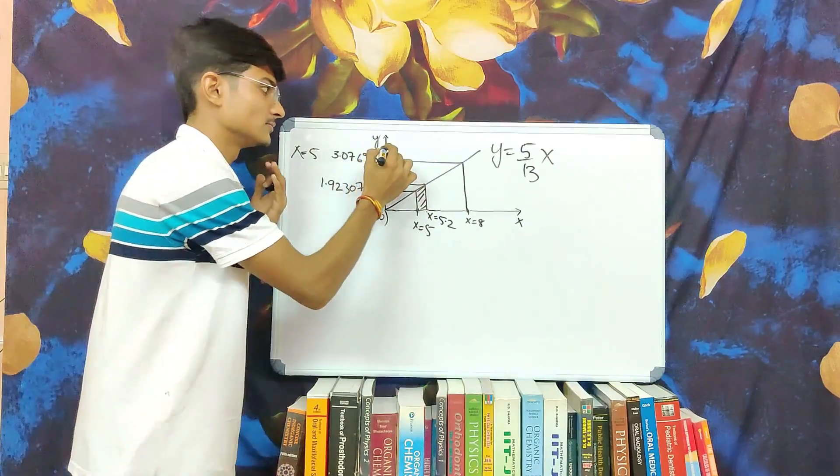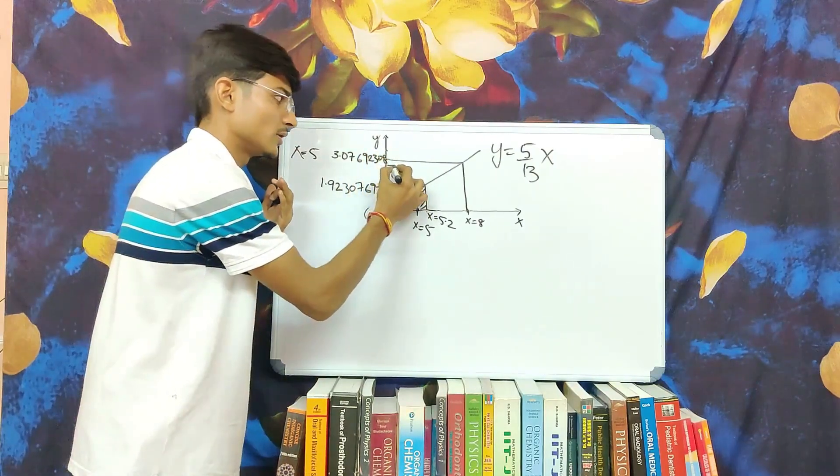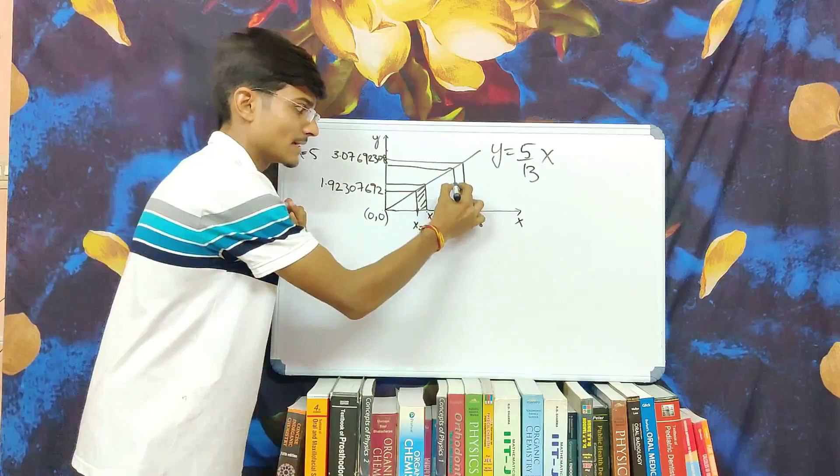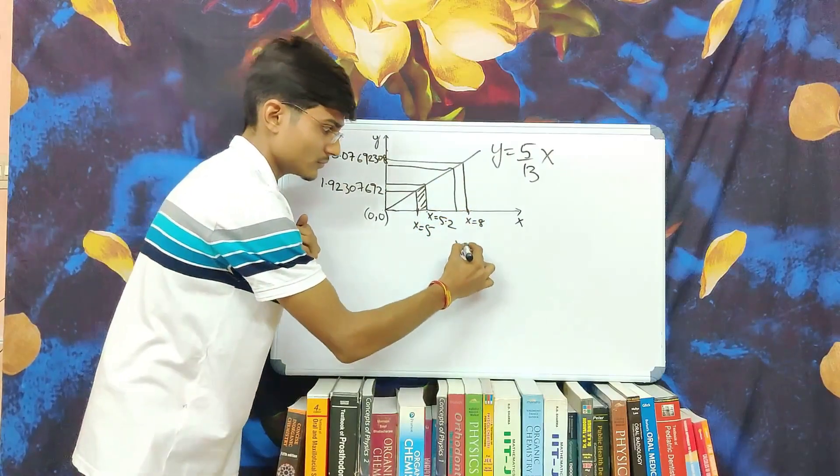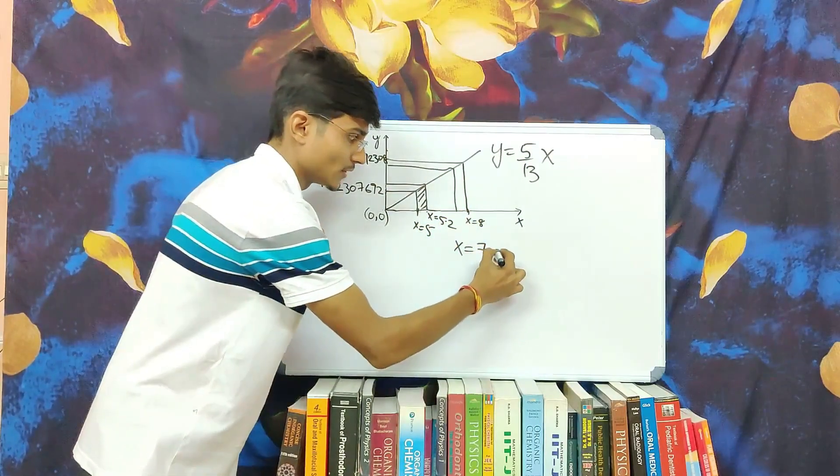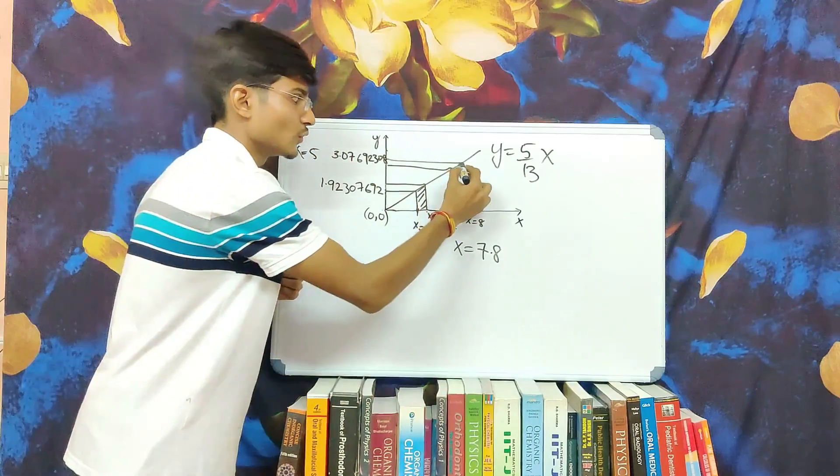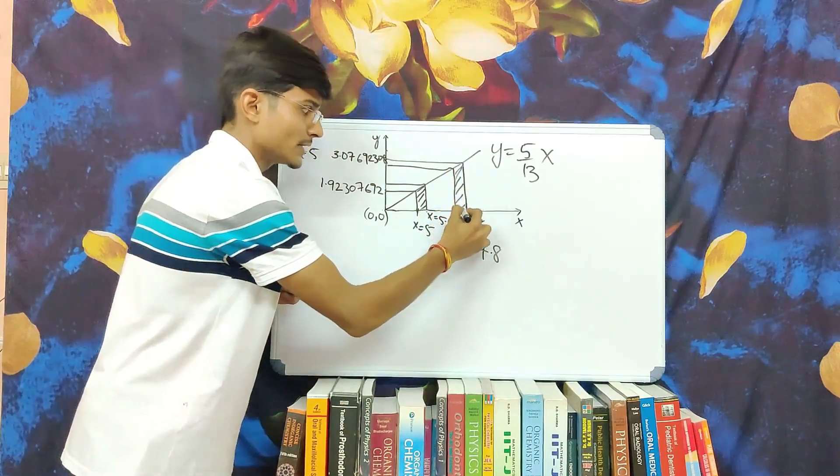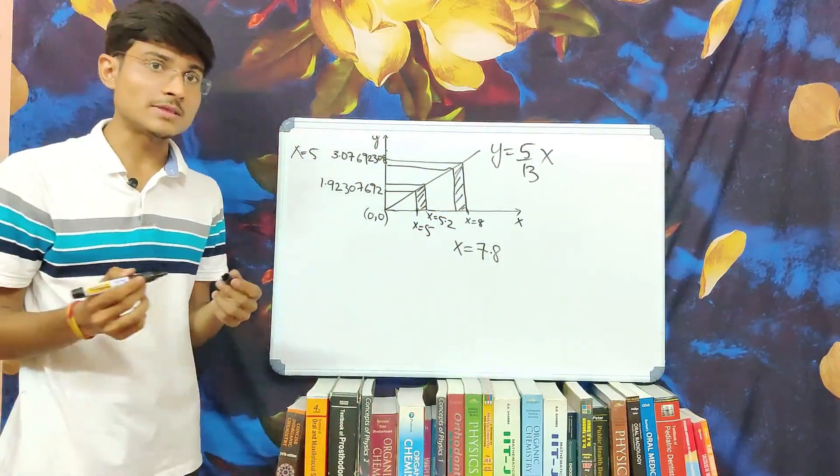On the other hand, at y equal to 3, we will get x equal to 7.8. So while we add both the areas, we may get the missing area.